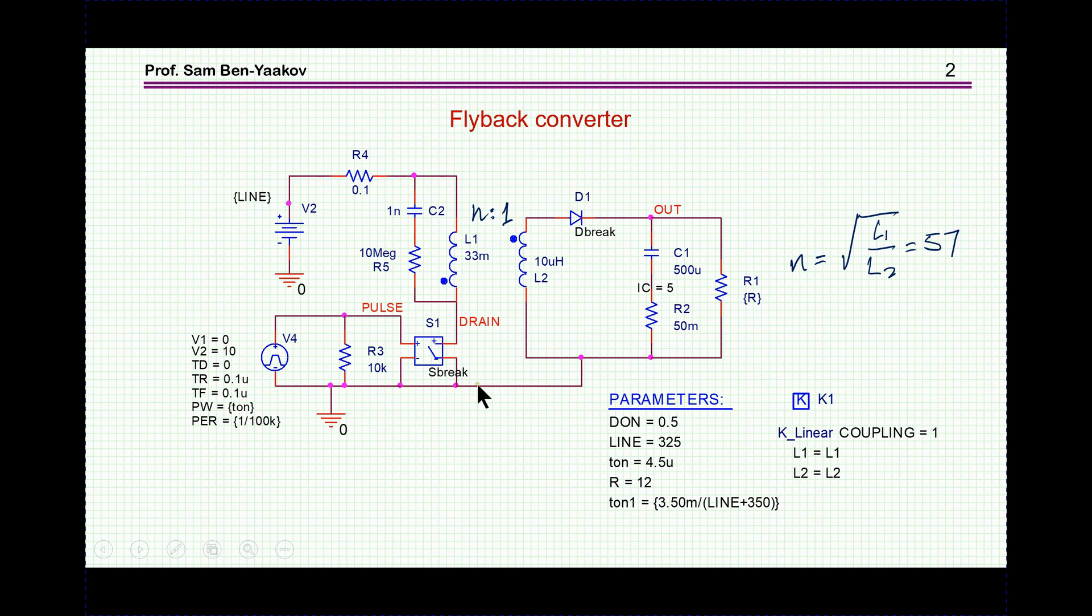I'm starting here with a PSPICE representation of a basic flyback converter. This is a generic switch driven by a pulse source. We have a primary 33 millihenries, secondary, and then we have an output section with a load and a filter capacitor. I also added some ESR, and this is the line voltage. The ratio here between the inductors is such that the turns ratio is about 57. This is coupled inductors, and just for simplicity, I'm assuming a coupling coefficient of 1. So this is the very basic representation of the switched circuit.